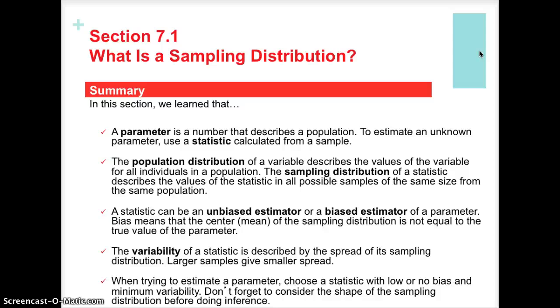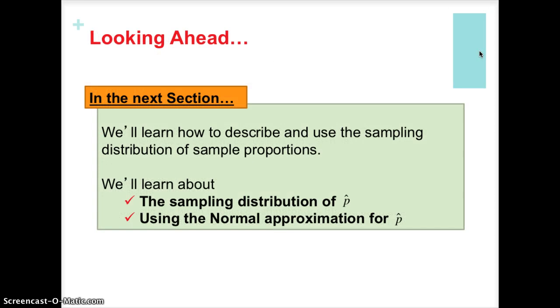We have something called an unbiased estimator, or it could be a biased estimator. An unbiased estimator is when we're on that target, when we take a sample and it's actually close to the population parameter that we're trying to estimate. If it's biased, it's off-center, it's far away from the population value. And the variability of a statistic is generally we're going to be looking at the standard deviation. We could be looking at the variance also. We want smaller spread, not larger spread.